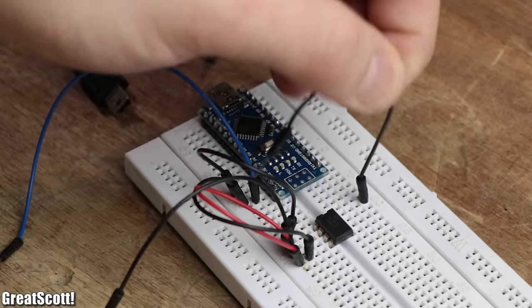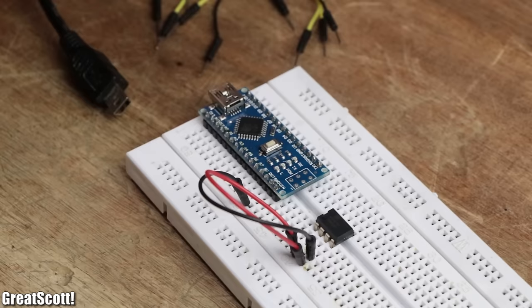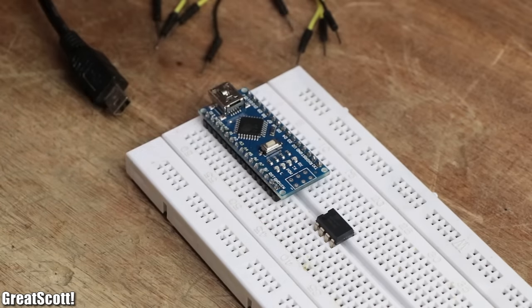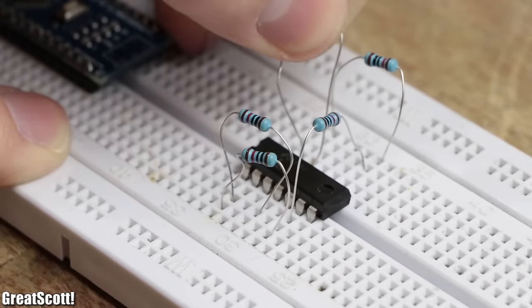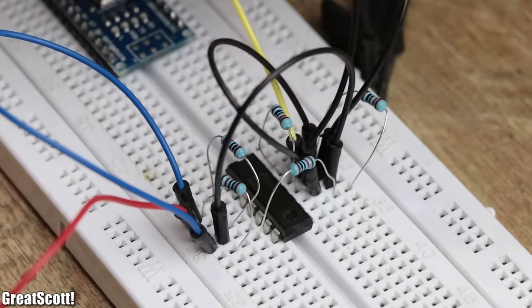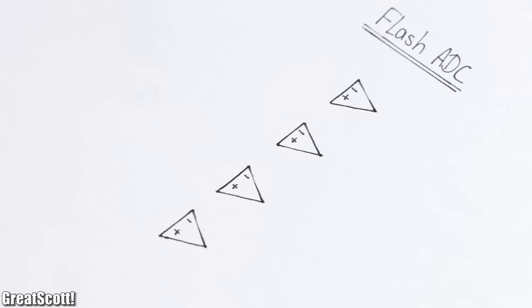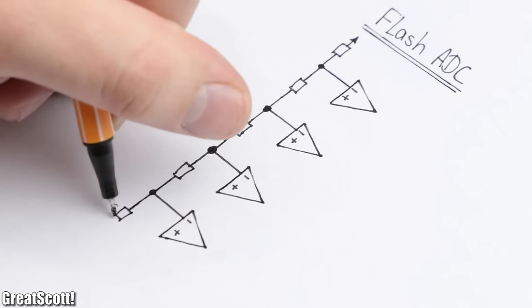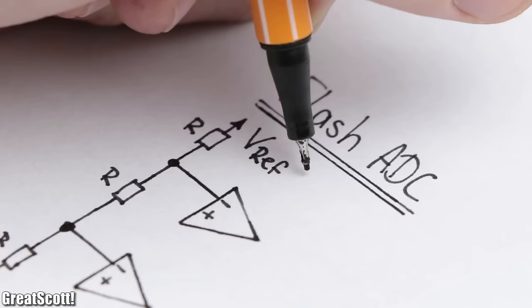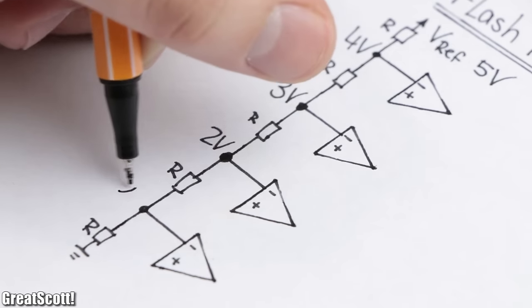This ADC though is obviously not self-built and not recommended to build since it requires a DAC. But another kind of ADC which is more appropriate for DIY is called a flash ADC. This 2-bit version basically consists of 4 comparators and 5 resistors which create a resistance network. With a reference voltage of 5 volts, we get different voltage values for each comparator.